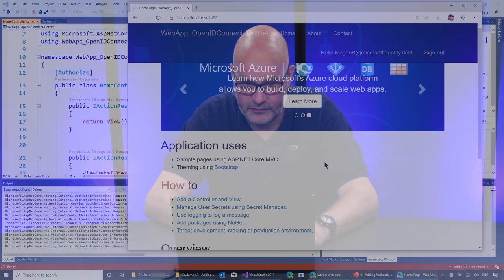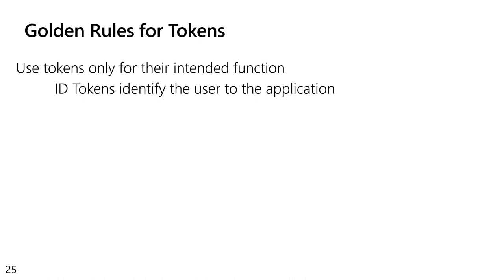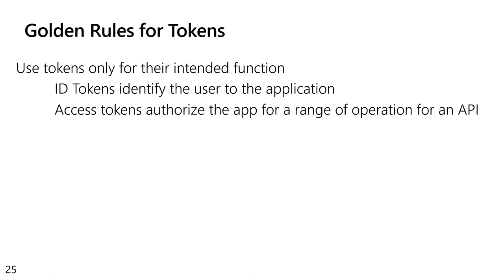Now you know what ID tokens and access tokens are, and how to write a single page app or an ASP.NET website. The concepts are the same for other platforms. Here are a few golden rules for tokens. Use tokens where they are intended for: use an ID token to authenticate a user, and use an access token to authorize a user against a resource. ID tokens are to identify a user — that's it. Access tokens authorize the app for a range of operations — those are the scopes. You send an access token to the resource, and the resource is responsible for validating it.